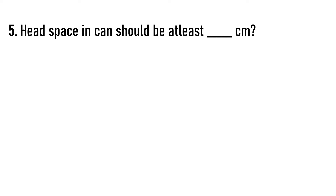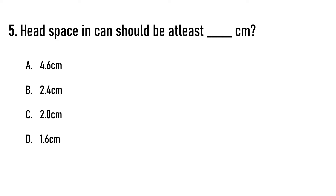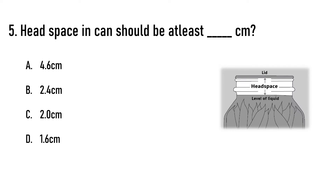Next question: Headspace in cans should be at least how many centimetres? Options are: A) 4.6 cm, B) 2.4 cm, C) 2 cm, D) 1.6 cm. The correct answer is option D, 1.6 centimetres.